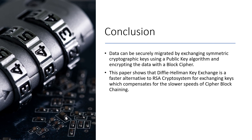We suggested combining different algorithms to protect the data at rest and then transfer it, providing a mechanism for three parties to exchange data securely. Data can be securely migrated by exchanging symmetric cryptographic keys using a public key algorithm and encrypting the data with a block cipher. This paper showed that Diffie-Hellman key exchange is a faster alternative to RSA for exchanging keys, compensating for the slower speeds in cipher block chaining while maintaining the strength of the encryption. This secures the data both at rest and in transit.